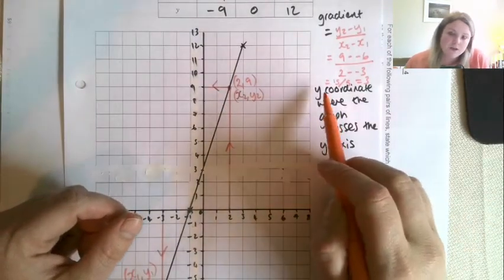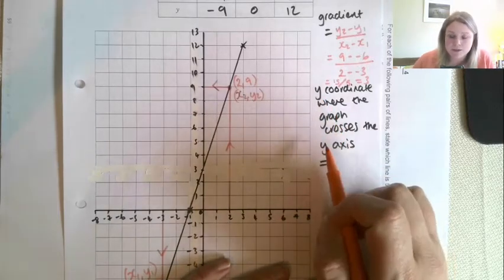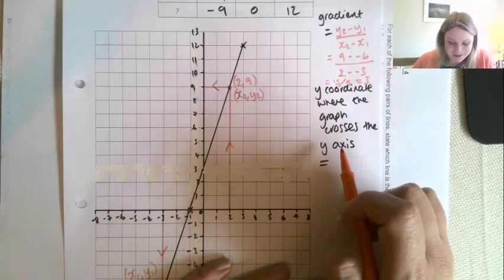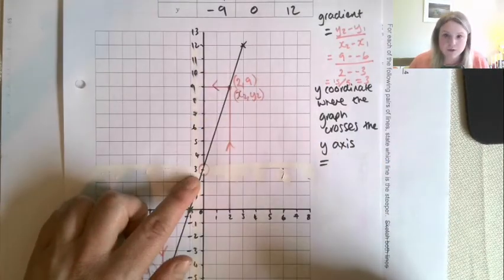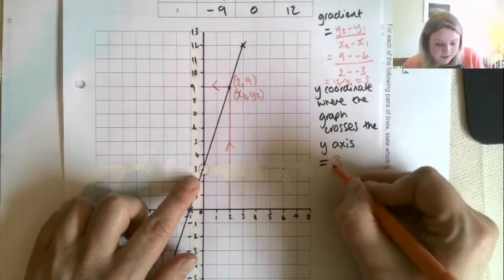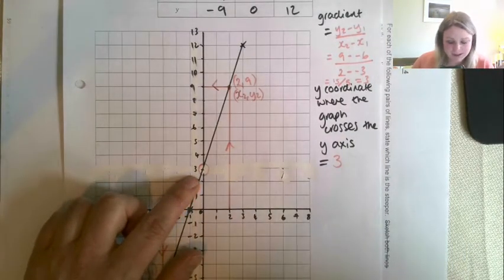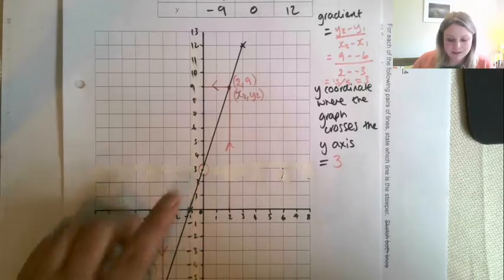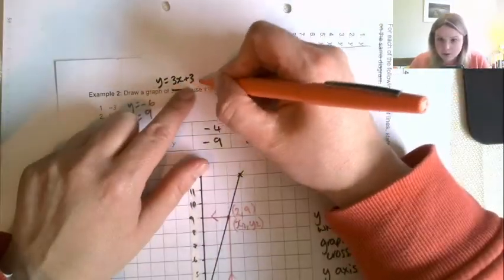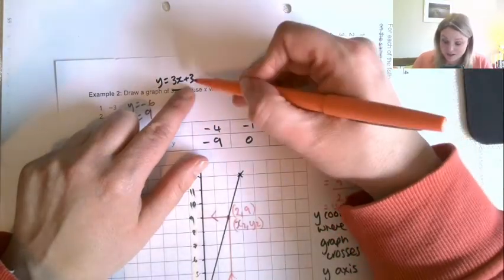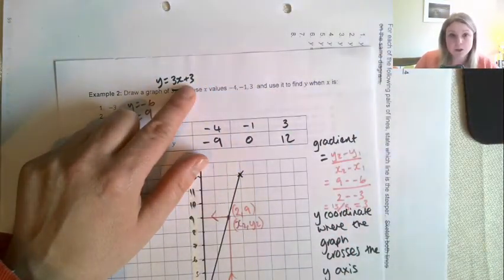Now then I'd ask you to figure out or to read off your graph the y-coordinate where the graph crosses the y-axis. So that's this point here. So your graph should have crossed the y-axis at 3. Now there's so many 3's in this equation that it's probably not the best example that we could have done, but it's not a coincidence that this number here is also 3. So that's what I want us to look at here today.